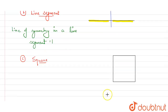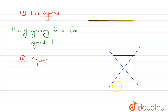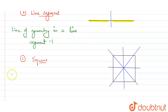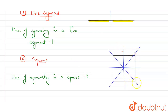Part C is a square. Let me draw a square. If I draw a diagonal line, both parts are identical — it is symmetric. Similarly for the other diagonal, and for the horizontal and vertical lines through the middle — all give symmetric halves. So there are four lines of symmetry in a square: one, two, three, and four. Lines of symmetry in a square equals four.